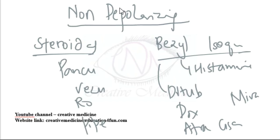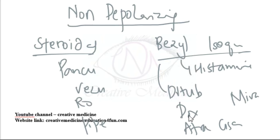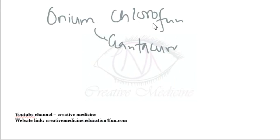Summary: Non-depolarizing agents can be divided into three types. Steroidal compounds are vagolytic and include pancuronium, vecuronium, pipecuronium, and rocuronium. Benzyl isoquinolinium compounds release histamine and include d-tubocurarine, doxacurium, atracurium, cis-atracurium, and mivacurium. Mixed onium chlorofumarate compounds include gantacurium.